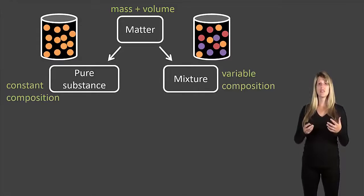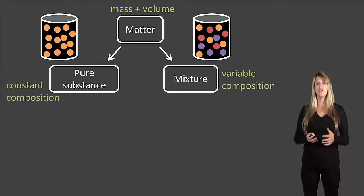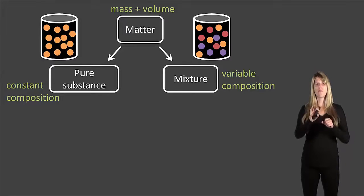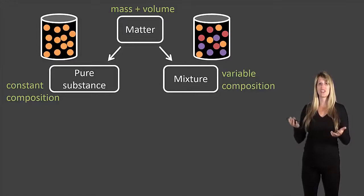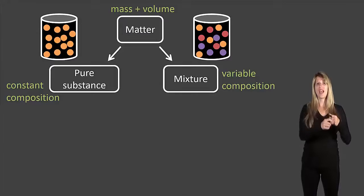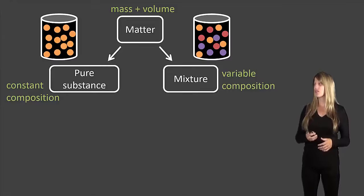Now our pure substances have constant composition which means if you took a sample of that pure substance from, for example, in that canister of orange circles, if you took a sample at any place you would end up with orange circles. So all the time it's going to be orange circles.